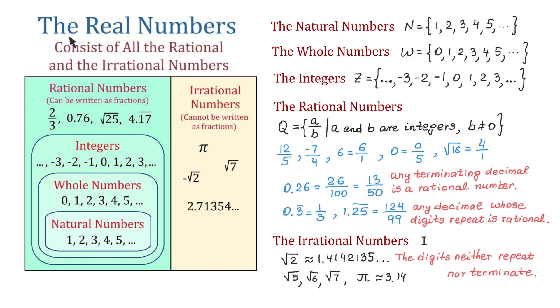And now the real numbers consist of all the rational numbers and all the irrational numbers together. So we can say that any of the numbers we have here are real numbers.